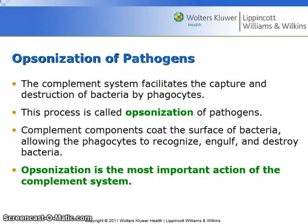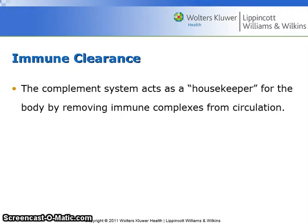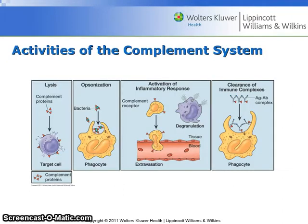Opsonization of pathogens: the complement system facilitates the capture and destruction of bacteria by phagocytes. This process is called opsonization of pathogens. Complement components coat the surface of the bacteria, allowing the phagocytes to recognize, engulf, and destroy the bacteria. Opsonization is the most important action of the complement system. The complement system can also recruit additional phagocytic cells to the site of an infection, and acts as a housekeeper for the body by removing immune complexes from circulation. See figure 8.7, page 144 of your textbook for more information.